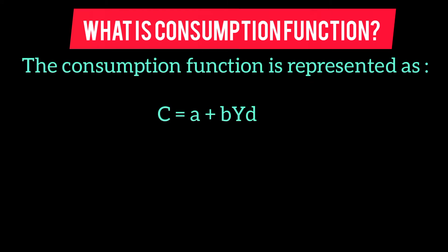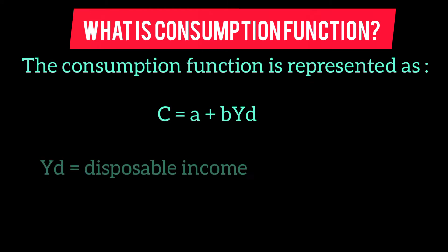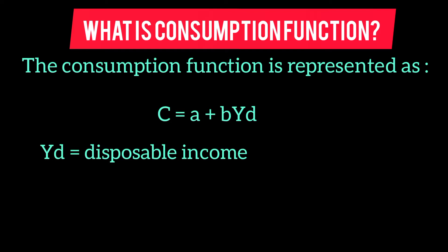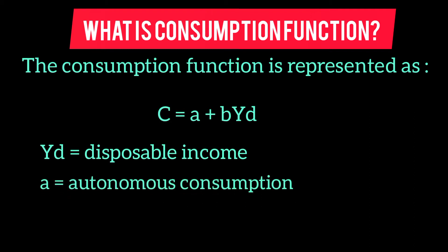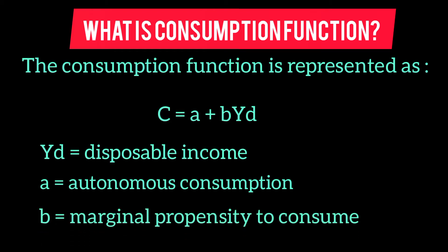The consumption function is represented as C = a + bYd, where Yd equals disposable income (income after government interventions such as benefits and taxes); a equals autonomous consumption (consumption when income is zero — for example, even with no income you may borrow to buy food); and b equals marginal propensity to consume (the percentage of extra income that is spent), also known as induced consumption.